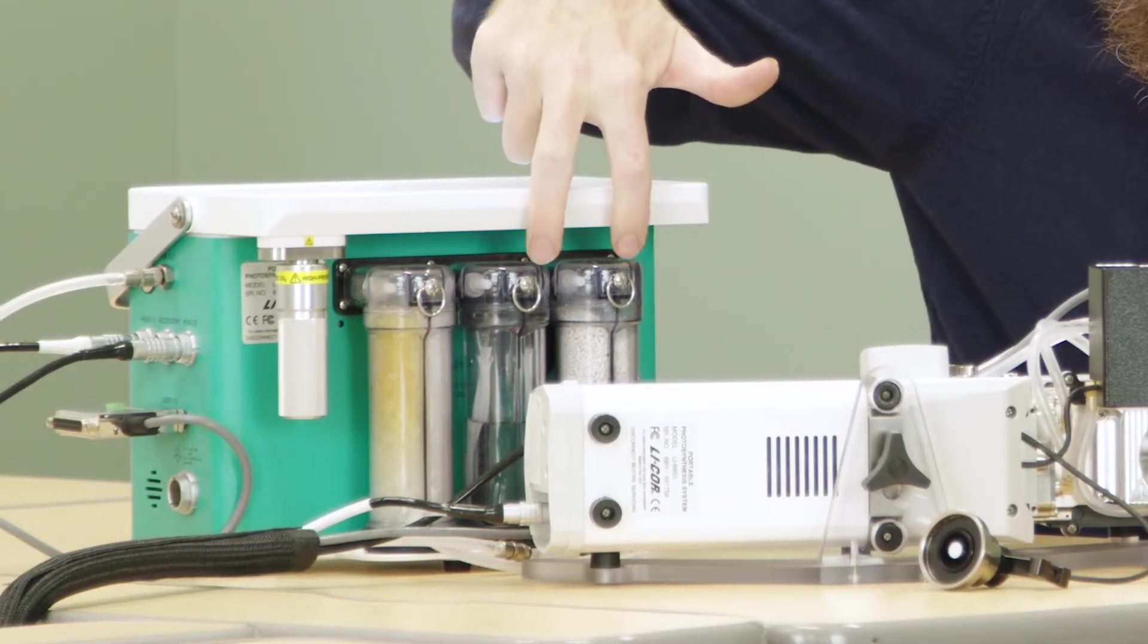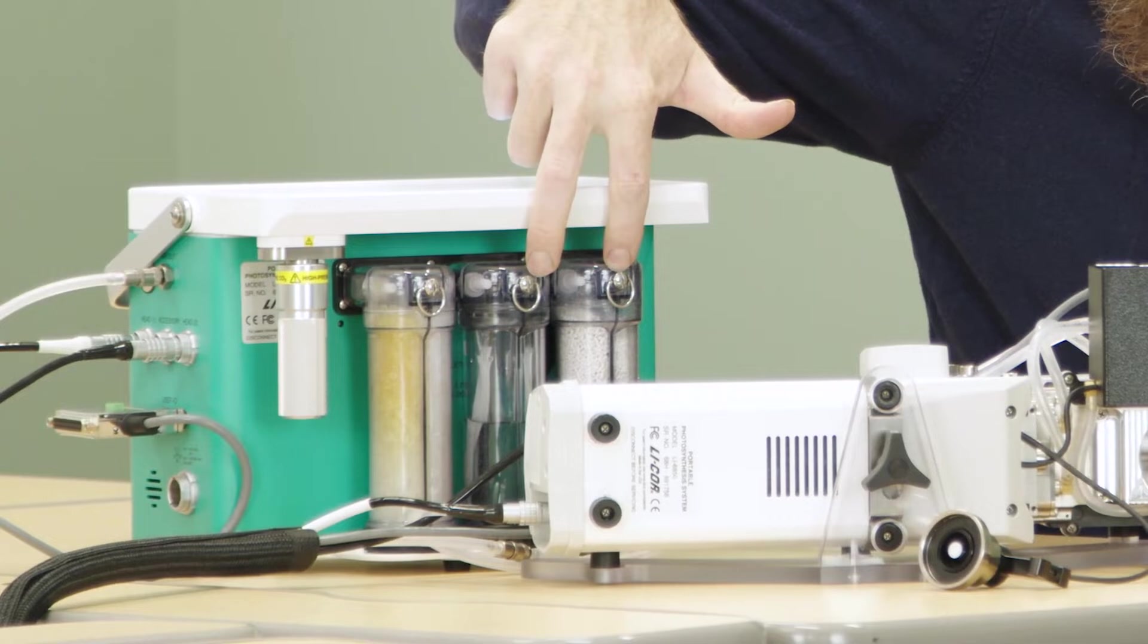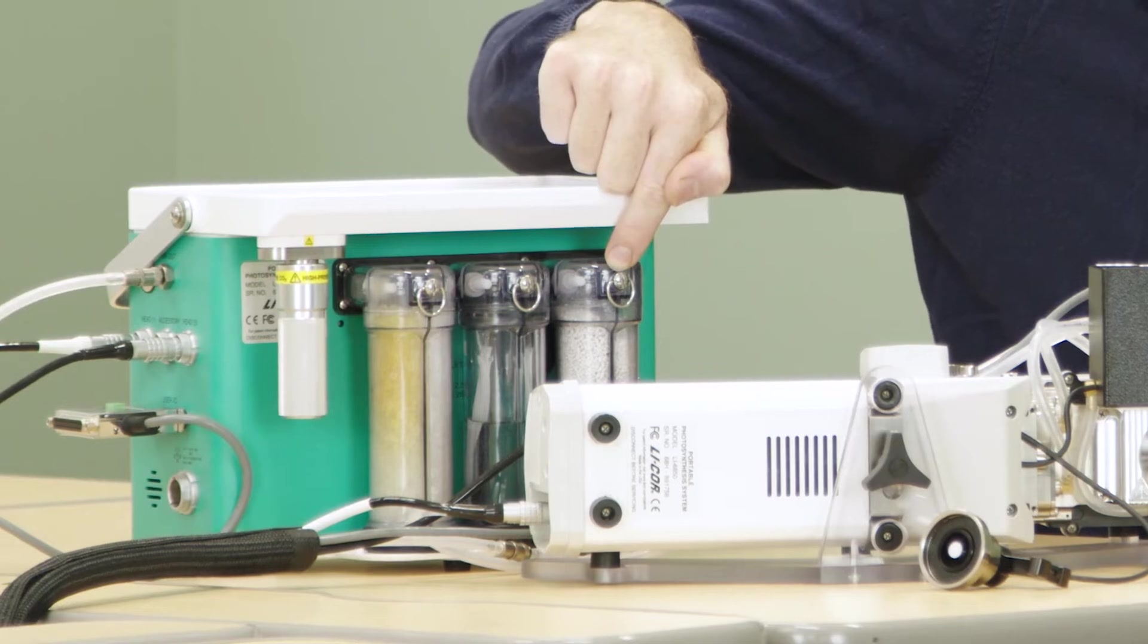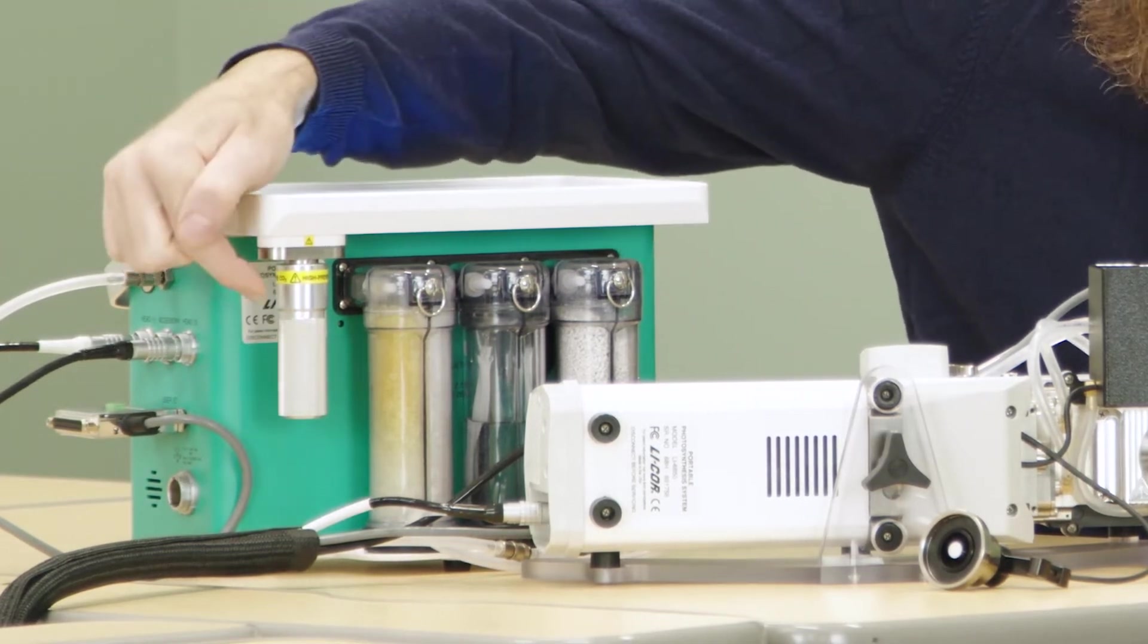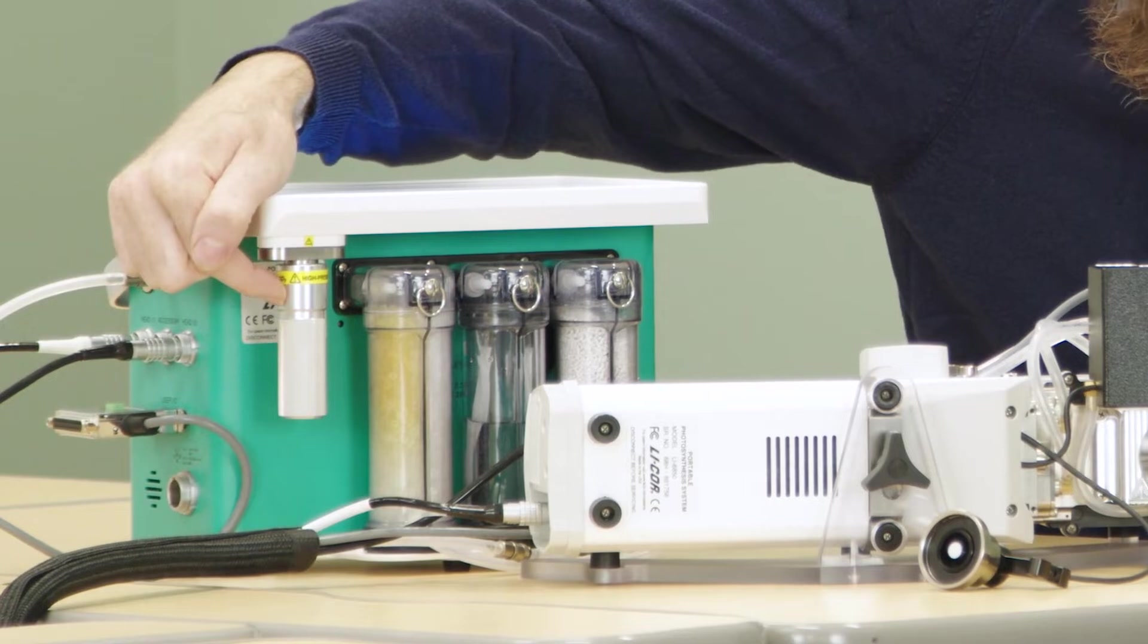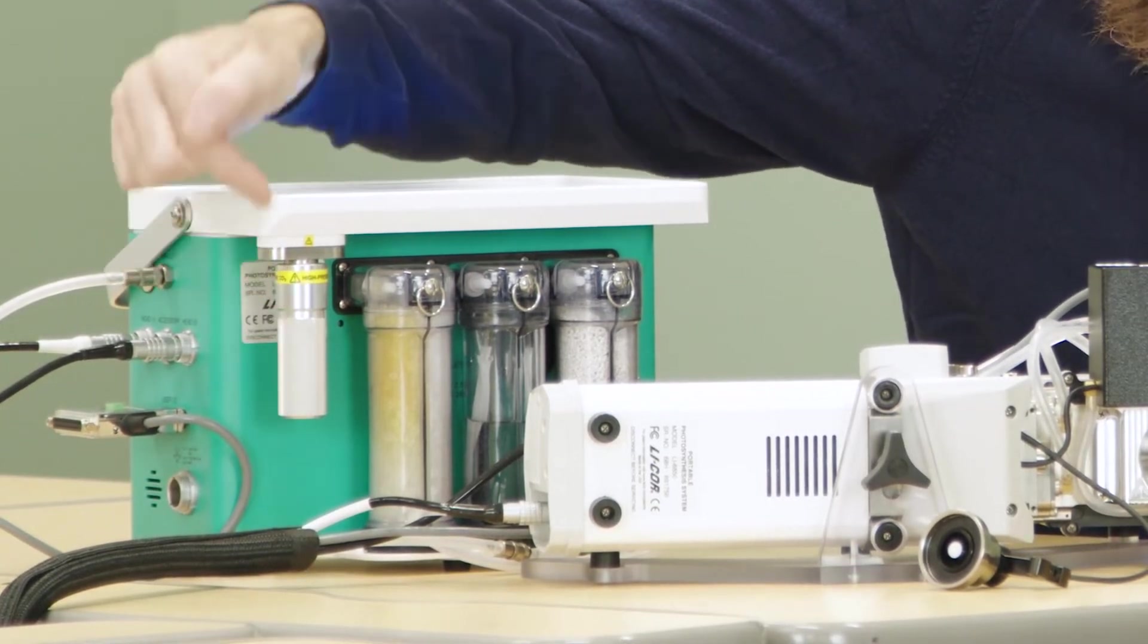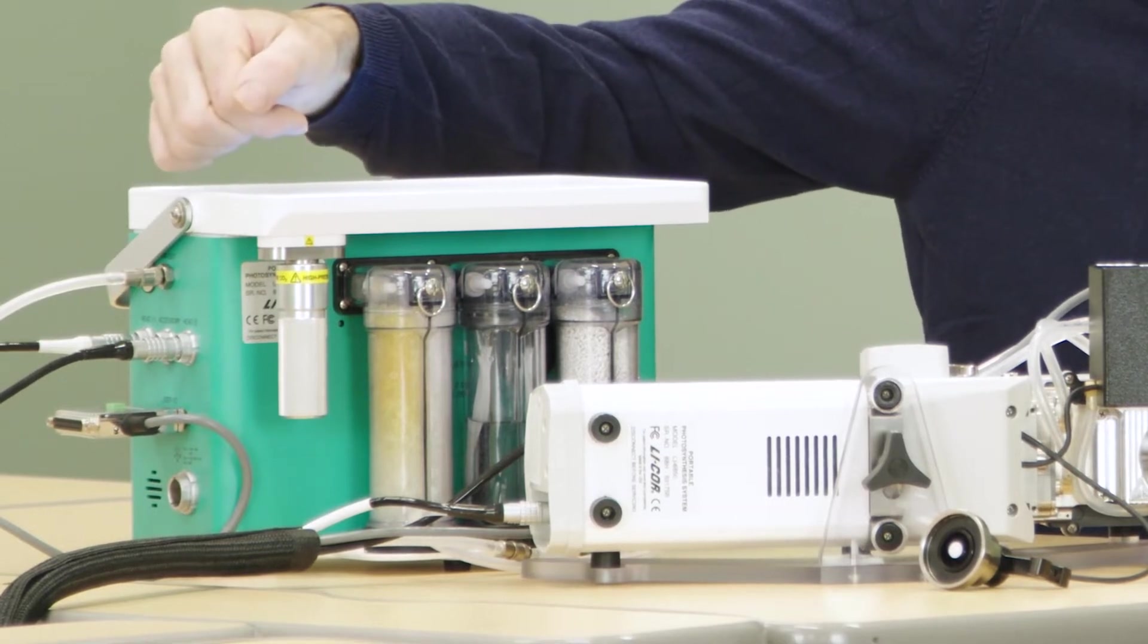The instrument brings ambient air in between these two chemical columns. It sends that air through this first column that contains soda lime that strips all the carbon dioxide out of it. And then it has a small cartridge of compressed carbon dioxide and a mass flow controller that's used to add carbon dioxide back to some user set point.